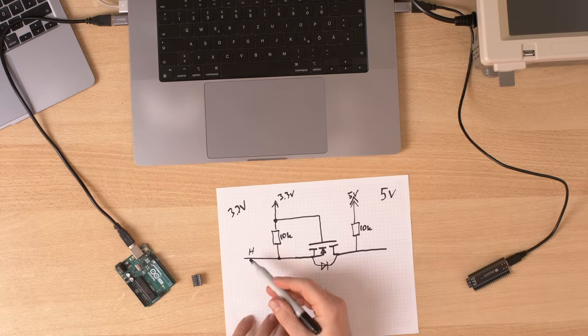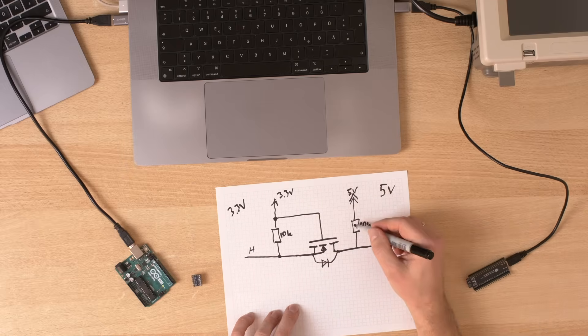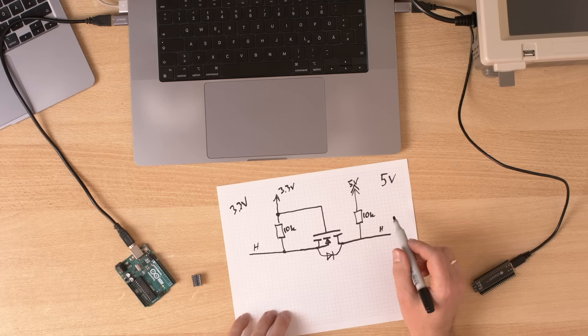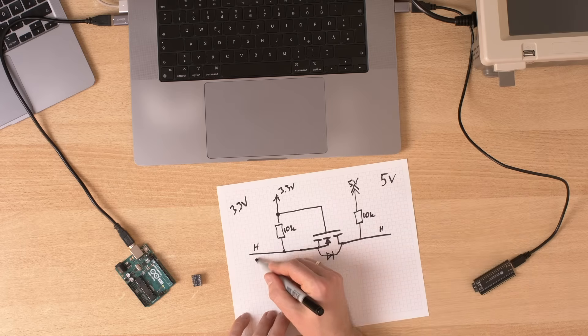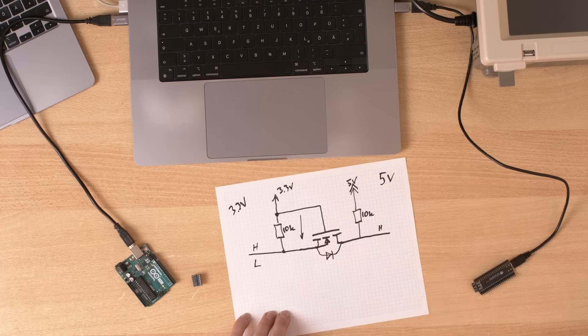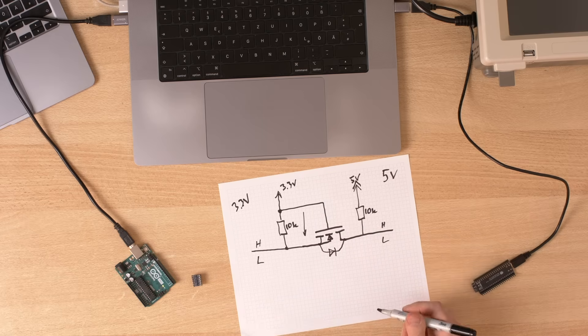One thing about these NMOS transistors here is that there is a parasitic diode inside. If you output a high signal here, 3.3 volts, then this has a pull up resistor. So we have 5 volts here, which is a high signal. If this is low, then we will have a voltage difference between gate and source. And this transistor will turn on. And if this transistor turns on, then both of these sides are basically connected. Low, in this case here.